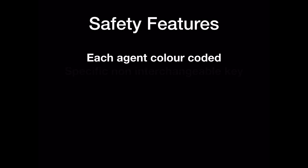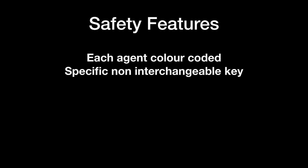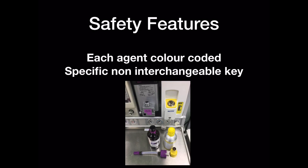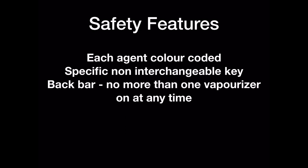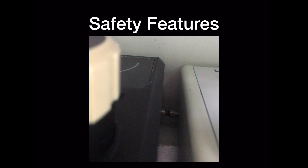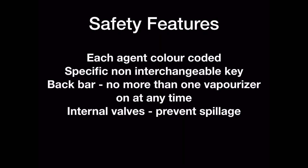Safety features: each vaporizer for each volatile agent has a different color — for example, sevoflurane is always colored yellow. Each volatile-specific vaporizer is filled with a different non-interchangeable key, so one cannot fill, for example, sevoflurane with isoflurane. Only one vaporizer can be switched on at any point the anaesthetic machine is on, secondary to the mechanism of interlocking bars on the anaesthetic machine. The vaporizer also has internal valves that prevent spillage if the vaporizer is knocked over.